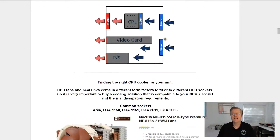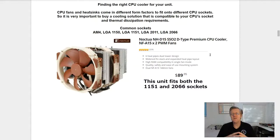As seen in this diagram here. So normally you go from the front, it blows over your components and exhausts through the back. Finding the right CPU cooler for your unit. CPU fans and heat sinks come in different form factors to fit onto different CPU sockets. So it is very important to buy a cooling solution that is compatible to your CPU socket and thermal dissipation requirements.